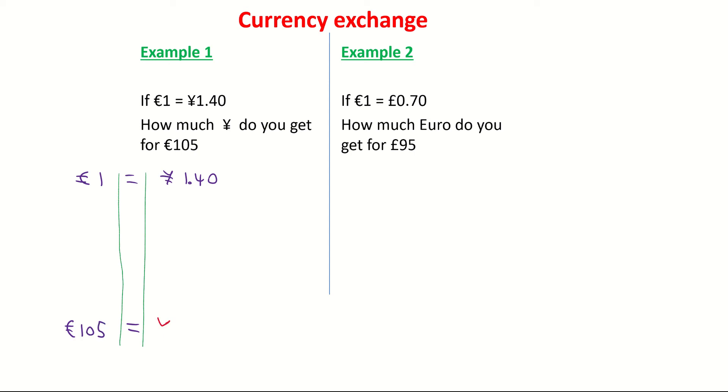I'm trying to figure out, how many yen do I get for my 105 euro? So to look at this, think of it like this. How do I get from 1 euro to 105 euro? Well, basically, what do you have to multiply 1 by to get to 105? I basically just need to multiply it by 105.